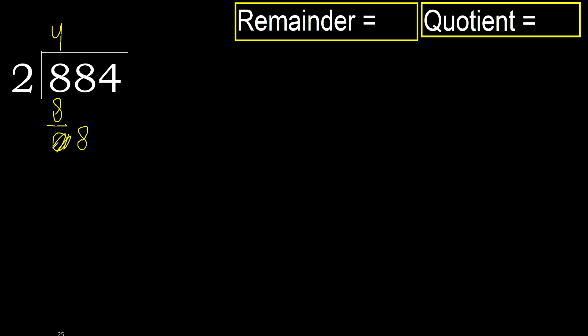Bring down 8. 2 multiplied by 4 is 8, which is not greater. Subtract. Next.